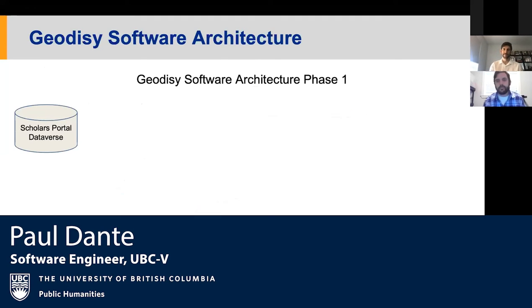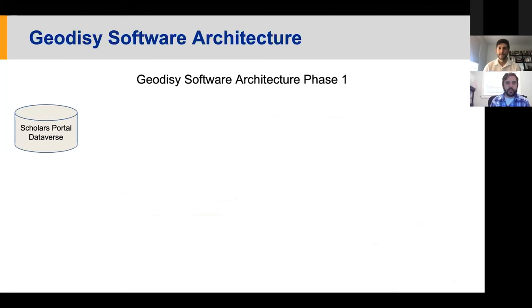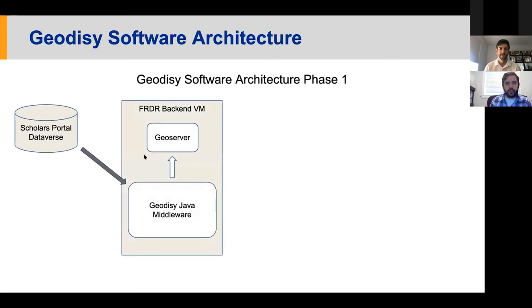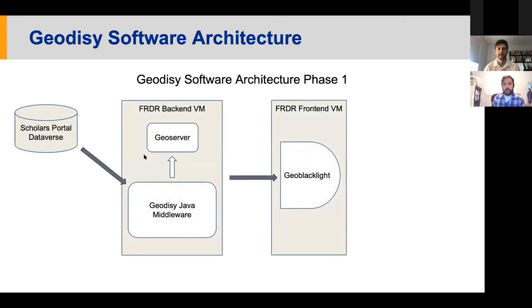Thank you, Mark. As Mark said, I'm going to go a little bit into the architecture. Initially we are just pulling information from Scholar's Portal Dataverse. We are taking metadata and geospatial files out of Scholar's Portal and bringing them into our middleware VM. The geospatial files are being put into GeoServer, which is used for geospatial file preview. The metadata is processed — we add some extra components to it, such as dates when it's collected. That is then sent to our front end, which is GeoBlacklight, a map-based open source component that most people will interact with. So researchers go to our website, which is an instance of GeoBlacklight. That's phase one.